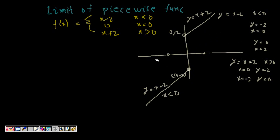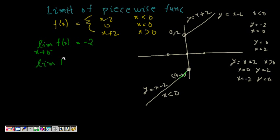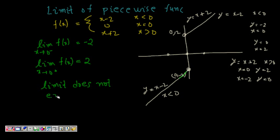Now we find the limit of f(x) as x tends to 0 from the left-hand side: approaching from this side, the value becomes minus 2. So the left-hand limit is minus 2. The right-hand limit as x tends to 0 from the right gives values like 2.1, 2.2, coming closer to 2, so it equals 2. Since the left-hand limit and right-hand limit are not equal, the limit does not exist here either.